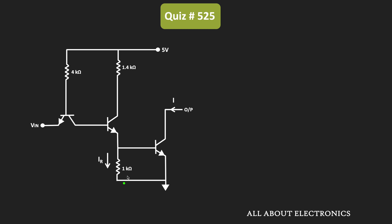So let us find the value of this current IR. If you observe this current IR, that is nothing but the voltage across this resistor divided by 1kΩ. And if you observe over here, the voltage across this resistor is nothing but the voltage difference between the base and the emitter terminal of this transistor. So basically, if we know the VB of this transistor, then we can easily find this current IR.